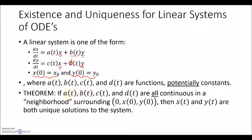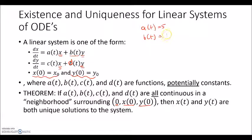The existence and uniqueness theorem for linear systems states: if a(t), b(t), c(t), and d(t) are all continuous in a neighborhood surrounding the initial condition, then x(t) and y(t) are both unique solutions to the system. For example, let a(t) = 5, b(t) = t² + 2t, c(t) = sin(t), and d(t) = 52 + cos(t).